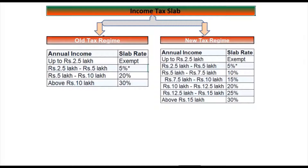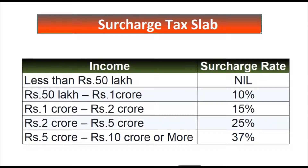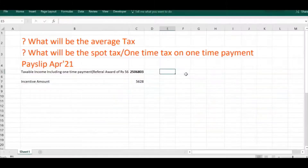In salary tax calculation, there are two aspects we must know. Number one is average tax, and number two is spot tax, which we can call a one-time tax. We will understand this with an example: taxable income of ₹25,6803, which contains a one-time payment — like an incentive — of ₹5628, apart from the regular salary.